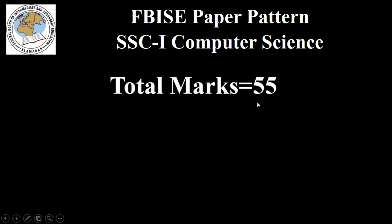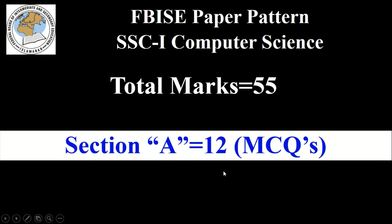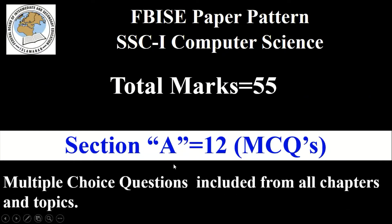First of all, the total marks in computer science SSC 1 paper is 55 marks. Section A has 12 marks and consists of MCQs — multiple choice questions — included from all chapters and topics.